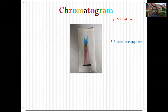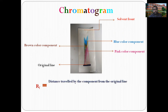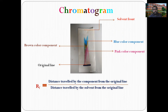On the chromatogram, we observe: a blue color component, a pink color component, a brown color component, and the original line at the bottom. The retardation factor (Rf) value equals the ratio of the distance traveled by the component from the original line divided by the distance traveled by the solvent from the original line. You will learn more about retardation factor in future classes.